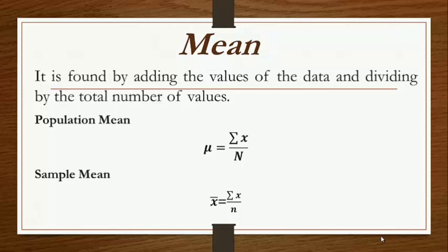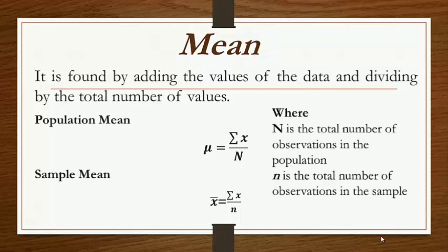There is no difference in the formula for solving the population mean and sample mean. Capital letter N is used to represent population, while small letter n is used for sample.